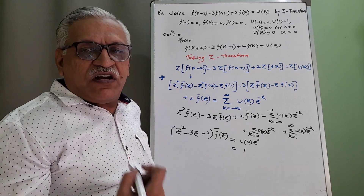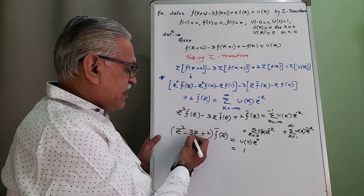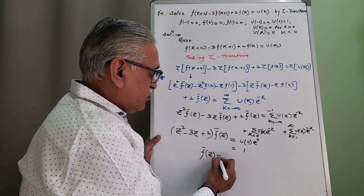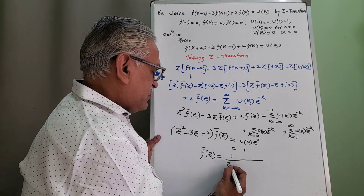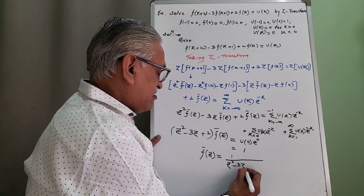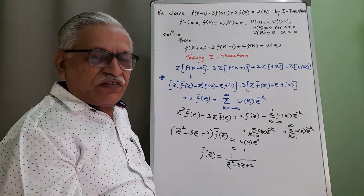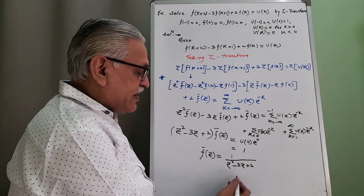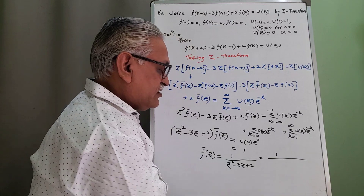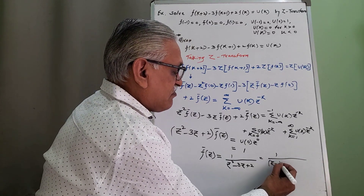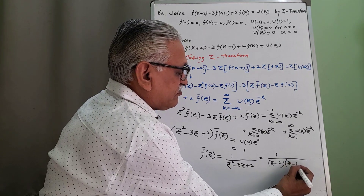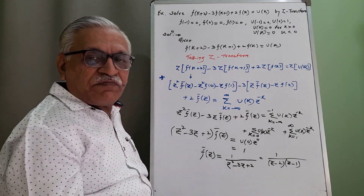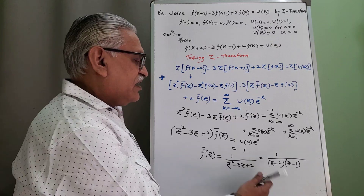Therefore, combining the three F̄(Z) terms on the left by taking F̄(Z) common, we get (Z²−3Z+2)·F̄(Z) = 1. Dividing both sides, F̄(Z) = 1/(Z²−3Z+2). Factoring the quadratic so the product is 2 and the sum is −3, the factors are (Z−2)(Z−1). This is equation 1.